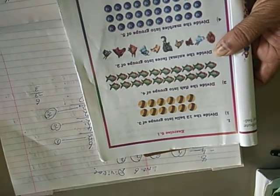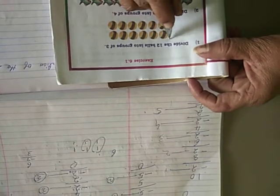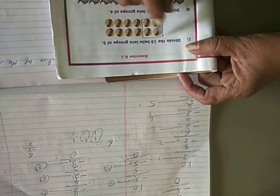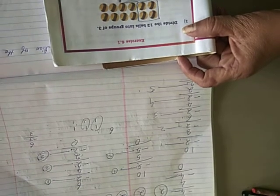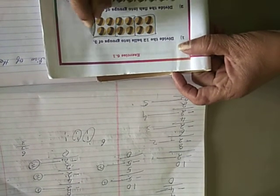From 12, you have to divide, make how many groups of 3? Groups of 3. If you make how many groups will come? 1, 2, 3, 4. So 4 groups you have to make children. How much each got? 4.